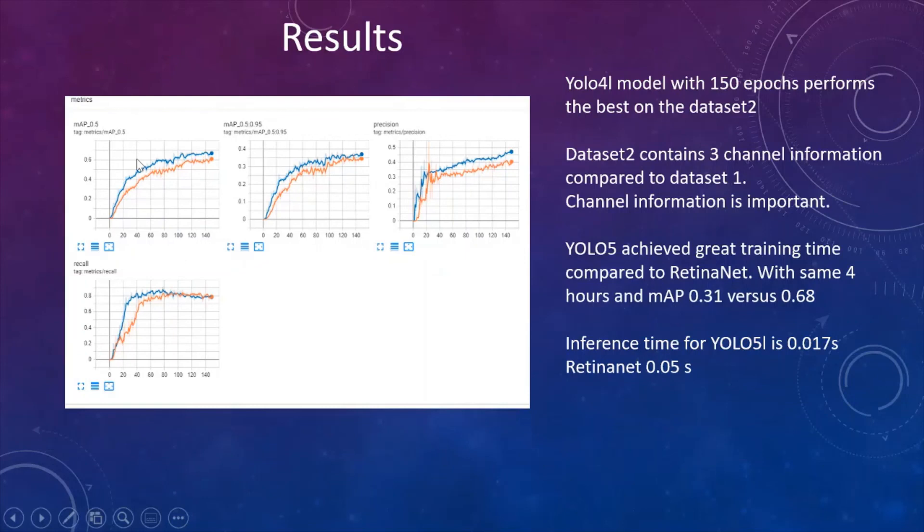Moreover we can see that YOLO-5L was outperforming YOLO-5S. And of course it was because we ran more epochs. And the maximum mean average precision that we achieved was 0.68. Here is a comparison between two YOLO-5L models but on different datasets. In blue is a dataset which contains three color channels. So we can say that channel information is still important. However, converting the data into grayscale gives us less than 50% of the training time and not losing so much accuracy.